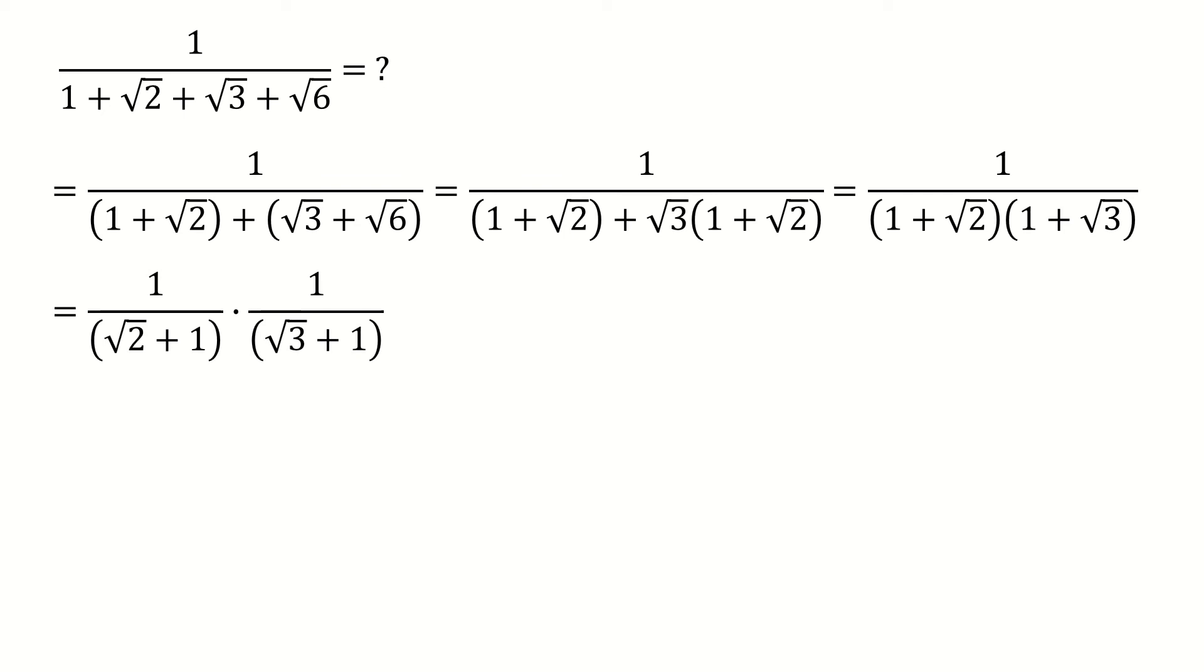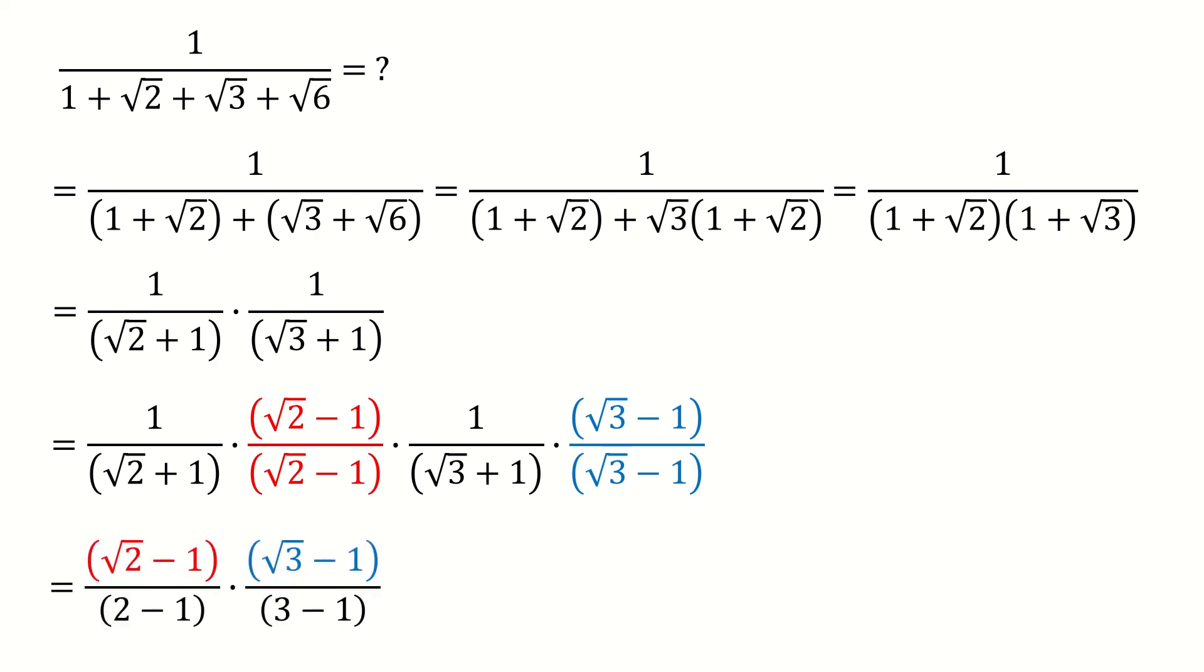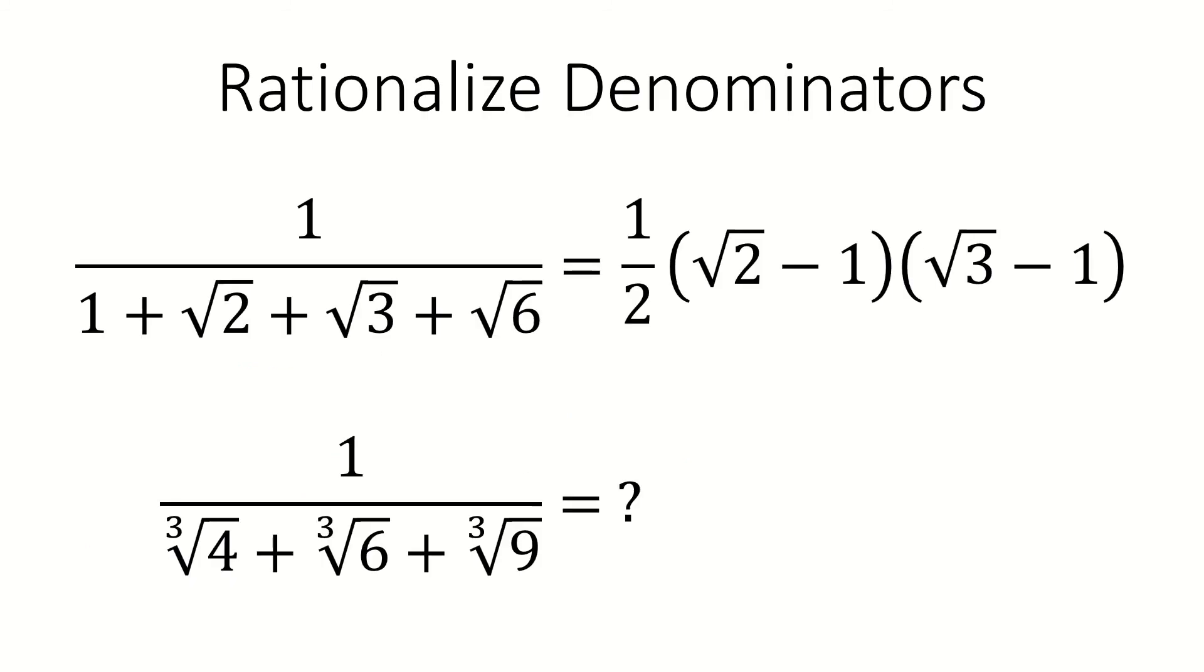Next, we write it into the product of two fractions. Then we just rationalize them separately. Following the standard steps, we multiply and divide their partners. Simplify it. Then we got the answer. So we have done the problem 1.